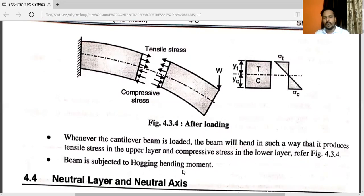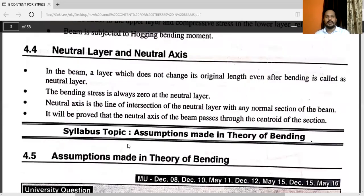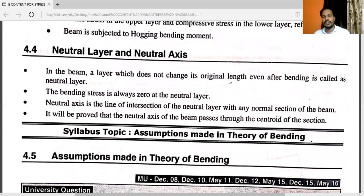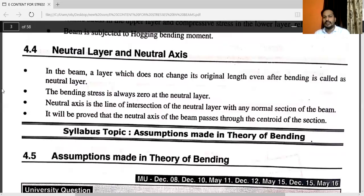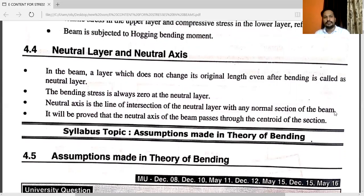The cantilever beam is subjected to hogging bending moment. Regarding neutral layer and neutral axis: a layer which does not change its original length even after bending is called the neutral layer. The bending stress is always zero at the neutral layer. The neutral axis is the line of intersection of the neutral layer with any normal section of the beam. It will be proved that the neutral axis passes through the centroid of the section.